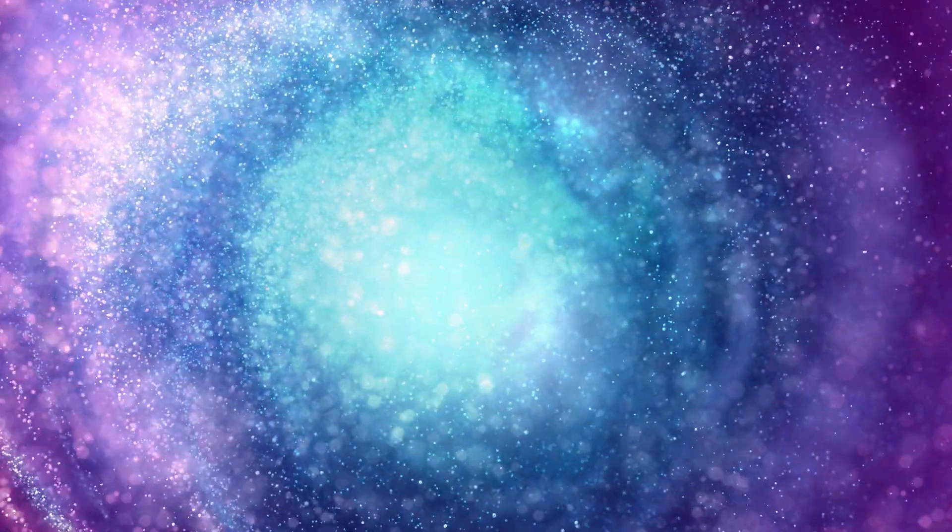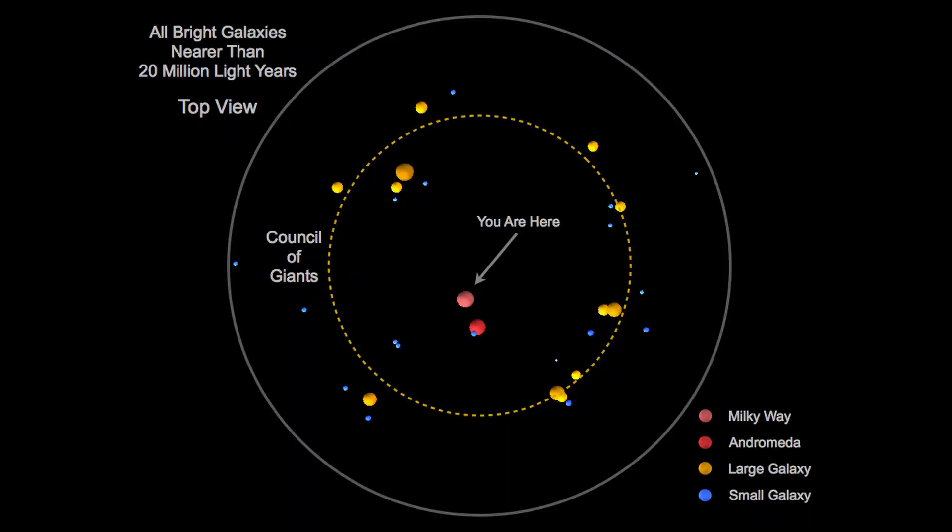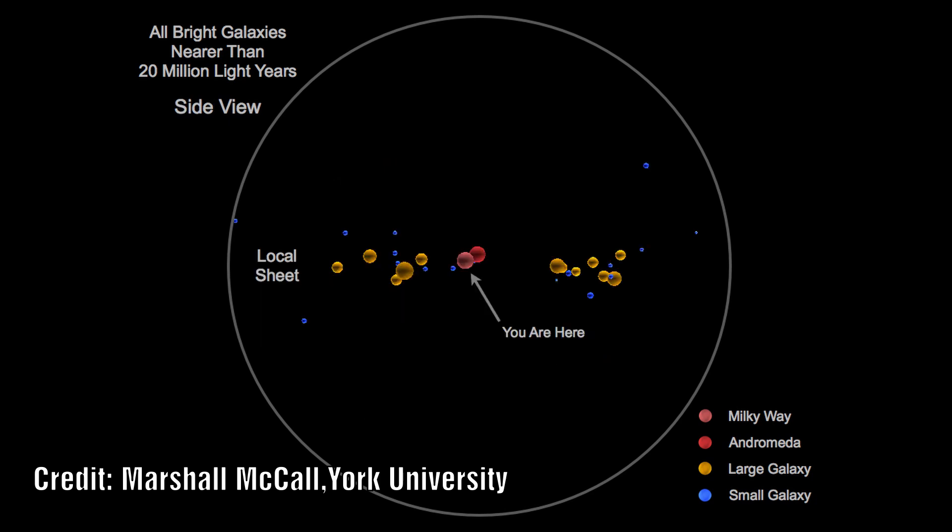In the 1950s Gerard Vaucouleurs was cataloguing galaxies and noticed that the bright galaxies fell along a great circle in the sky. He realized that the galaxies were distributed in a flattened disk and that their strongest concentration was in the direction of the constellation Virgo.